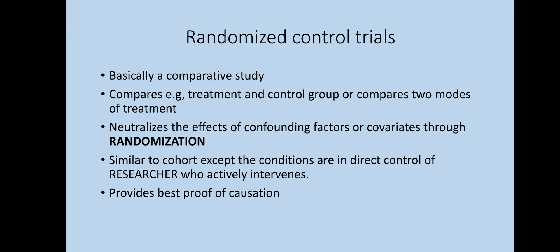Randomized control trials are basically a form of comparative study — they compare groups, for example a treatment group and a control group, or they compare two modes of treatment. RCTs neutralize the effects of confounding factors or covariates through a process known as randomization. RCTs are similar to cohort studies, except that conditions in RCTs are under the direct control of the researcher, who actively intervenes, while in cohort studies the researcher does not actively intervene and the research is mainly observational. RCTs provide the best proof of causation.